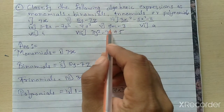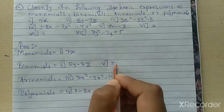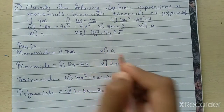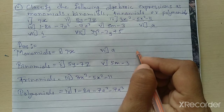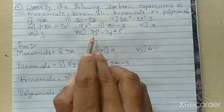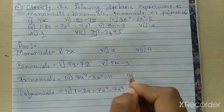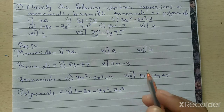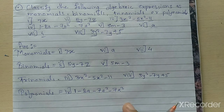Continuing Practice Set 32: Fifth: 5m minus 3 — two terms, so it is a binomial. Sixth: a — only a, one term, so it is a monomial. Seventh: 4 — only a number, still one term, so it is a monomial. Eighth: 3y² minus 7y plus 5 — three terms, so it is a trinomial. Please practice and solve this Practice Set 32 in your notebook for better understanding. Thank you.